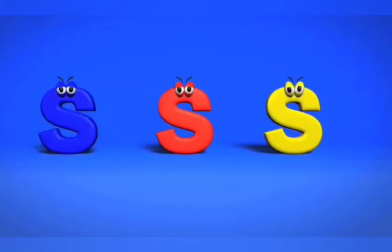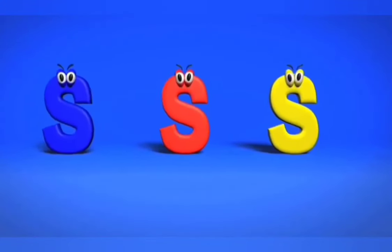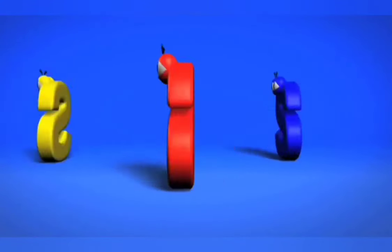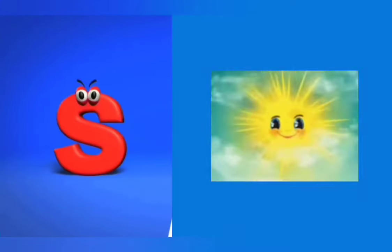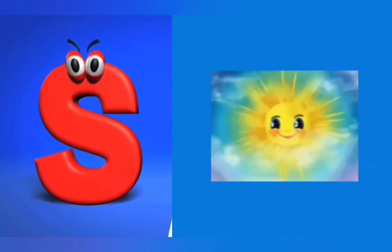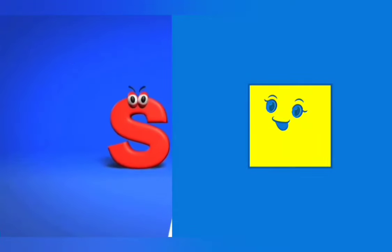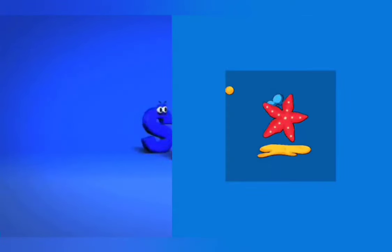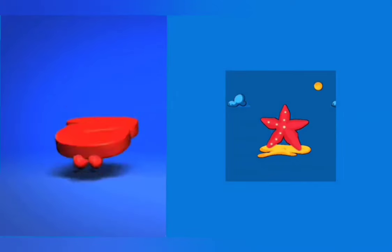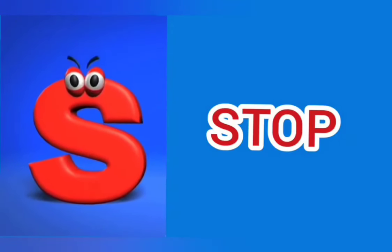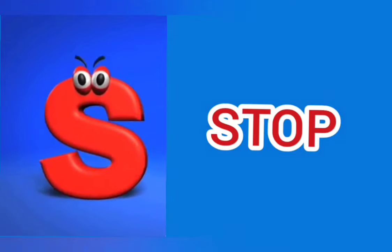Here comes the letter S. S is for sunshine, s, s, sunshine. S is for square, s, s, square. S is for starfish, s, s, starfish. S is for stop, s, s, stop.